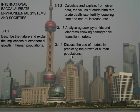Welcome. Today we describe the nature and explain the implications of exponential growth in human populations. We calculate and explain from given data the values of crude birth rate, crude death rate, fertility, doubling time, and natural increase rate. We analyze age-sex pyramids and diagrams showing demographic transition models, and we discuss the use of models in predicting the growth of human populations.